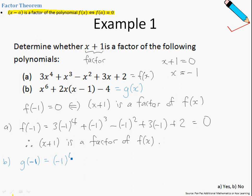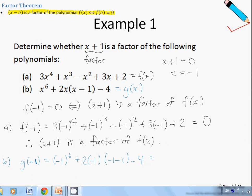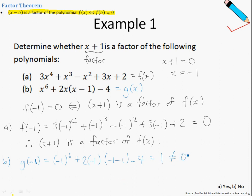So let's try this out. So we have (-1)^6 plus 2 times (-1), minus 1, minus 1, minus 4. Punching this into my calculator, I arrive at the value 1, which is not equal to 0. Therefore, x+1 is not a factor of g(x).